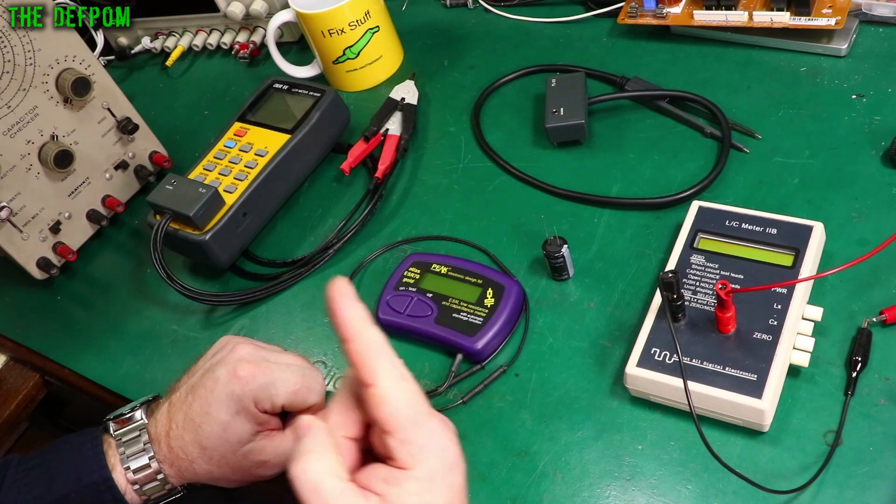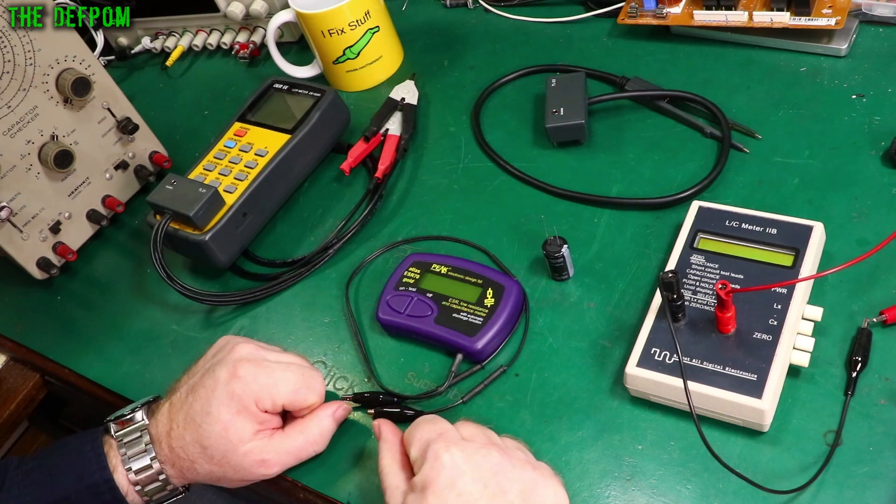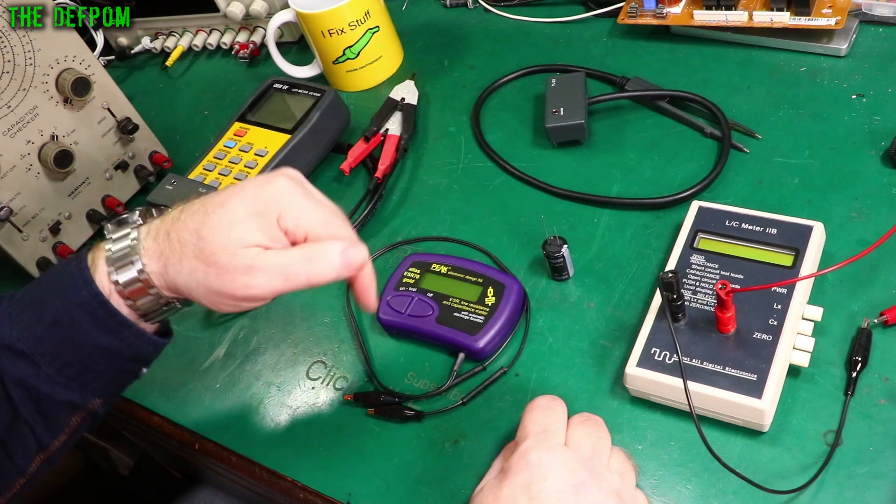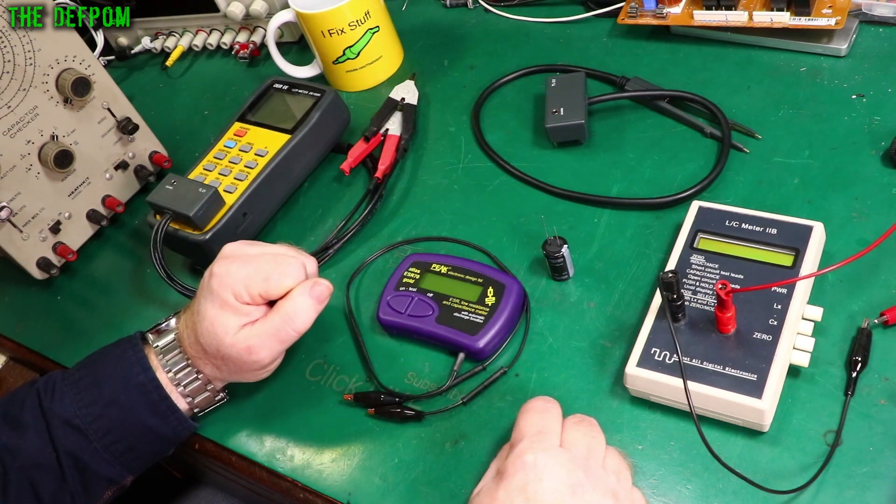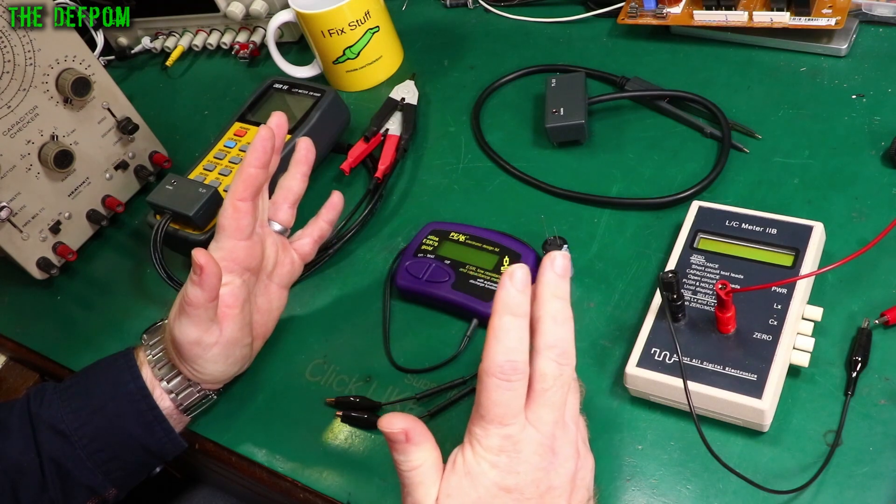Also up here on my shelf I've got an East Tester ET4401 which is another LCR meter which I have done a review on. I'll chuck a link down below for that as well so make sure you check that out. I should really turn one of these things on so you can see what I'm talking about.